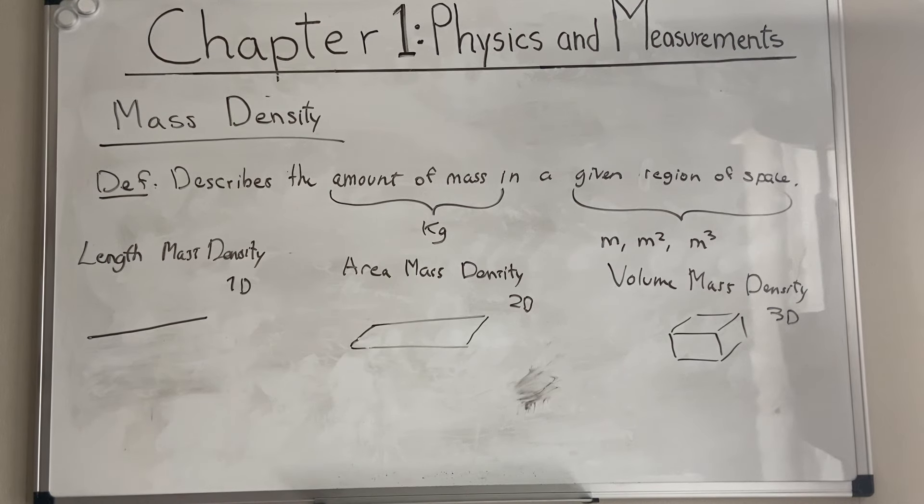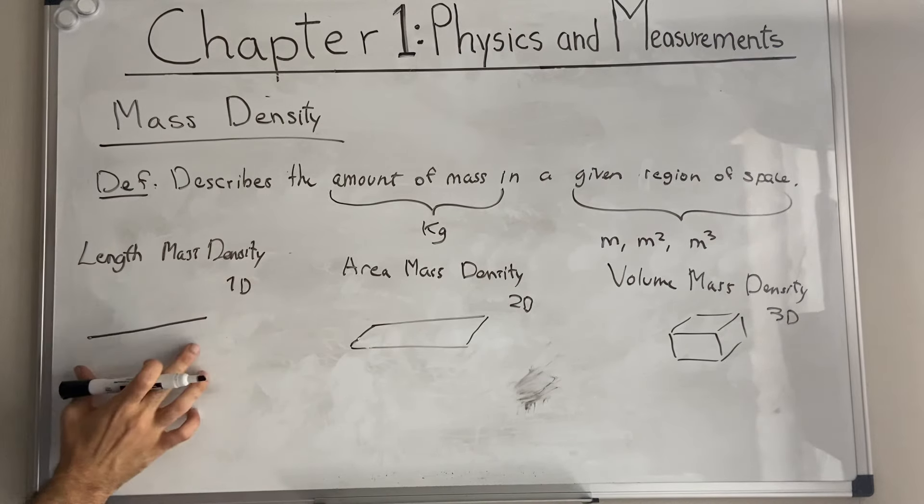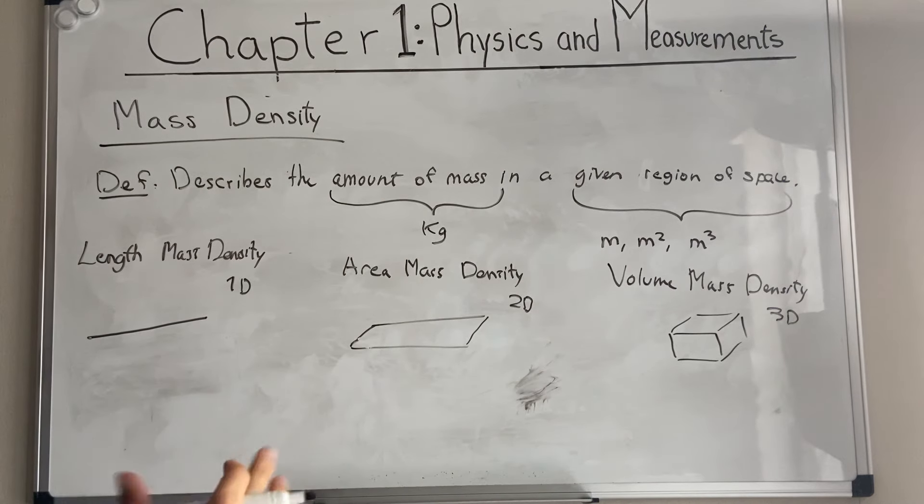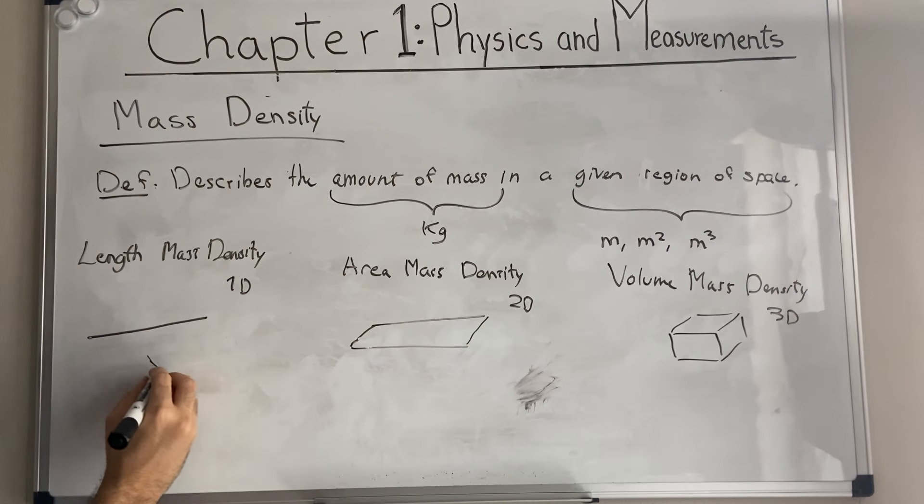The reason I'm talking about this is because we have a way of just deriving mass from these different equations that define the mass density of a line, a plate, or a solid. Here the equation that we use to define a length mass density is this little symbol. To be honest, I don't know what it is called. And so what we're going to use as a formula is this: if we take the integral of this equation with respect to length, then we basically obtain the mass of this object.